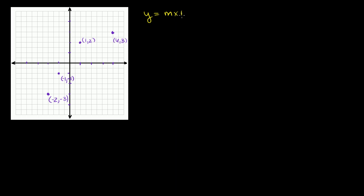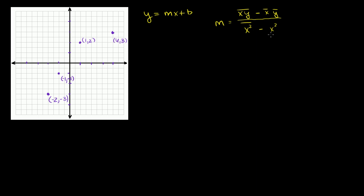Just as a reminder, the line is going to have the equation y is equal to mx plus b. And we've shown ourselves that the slope of this line — the one that best minimizes the squared distance to each of those points — is going to be the mean of the xy's minus the mean of x times the mean of y, all of that over the mean of the x squareds minus the mean of the x's squared.